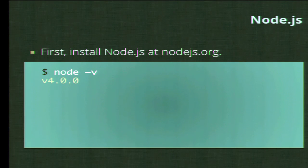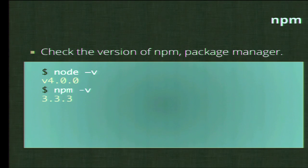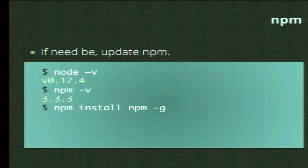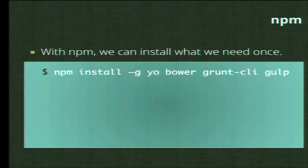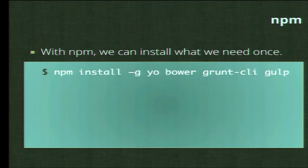The first thing we need is to install Node — it's a very good runtime environment. You also want to have Node Package Manager. The way to update NPM is with a simple command. To install all dependencies, you do 'npm install' with the -g flag to globally install Yeoman (yo), Bower, the Grunt CLI, and Gulp. You can have all of those available in your system.